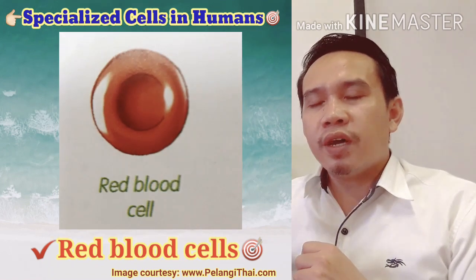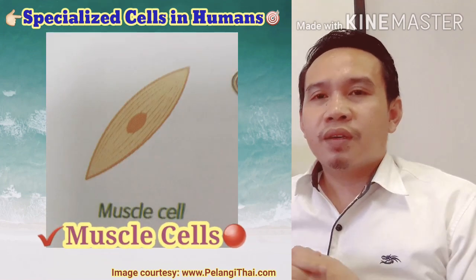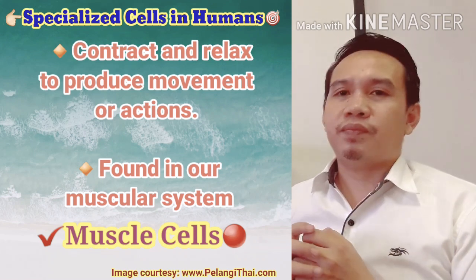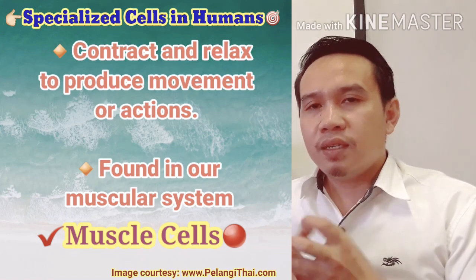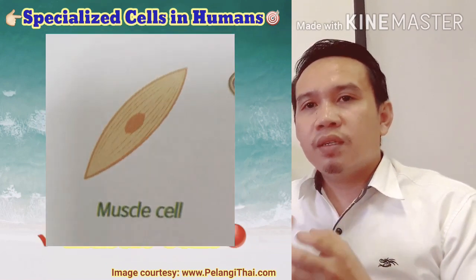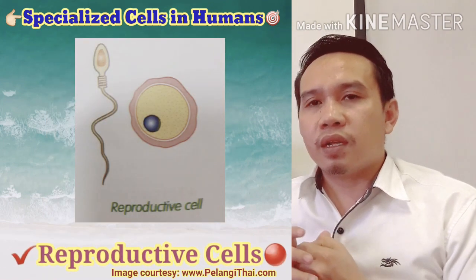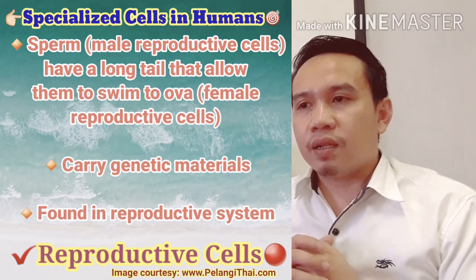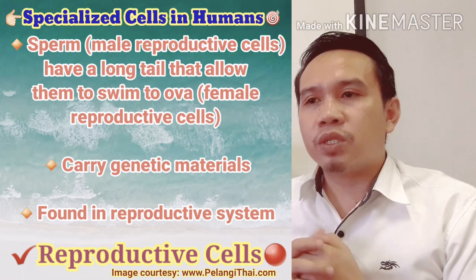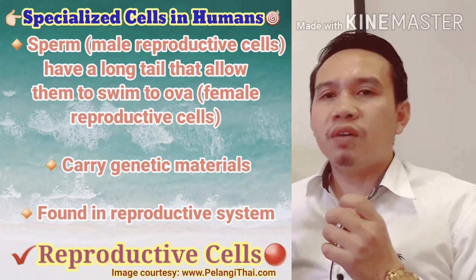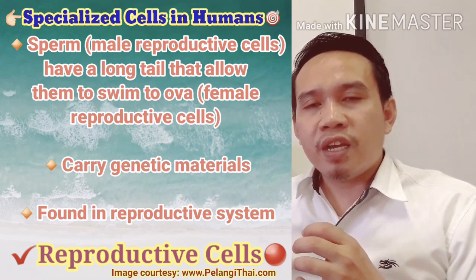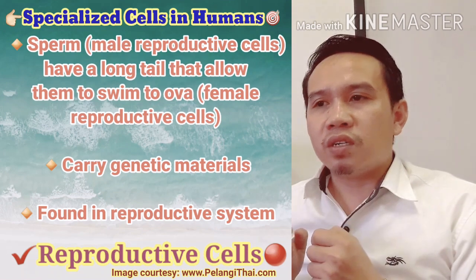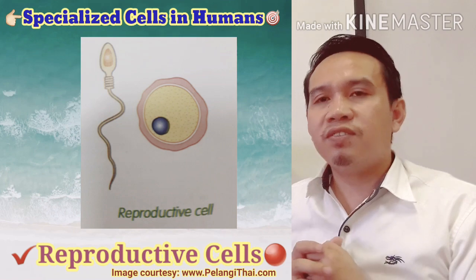Next are muscle cells. Found in the muscular system, muscle cells contract and relax to produce movement and action. The reproductive cells, found in the reproductive system, include sperm produced by male reproductive cells. Sperm have a long tail that allows them to swim to the ovum of female reproductive cells during fertilization. Reproductive cells also carry genetic materials.